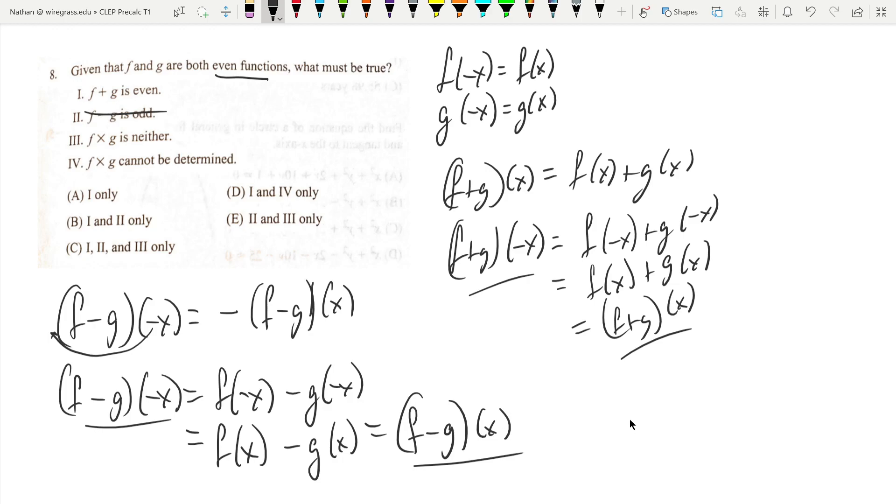Statement III says f times g is neither even nor odd. Well, f times g of negative x is going to equal f of negative x times g of negative x. That gives us f of x times g of x, which is just f times g of x. And that means it's an even function. So it can't be neither, and it definitely can be determined. I just showed here that it's even. So the only one that's true is A.